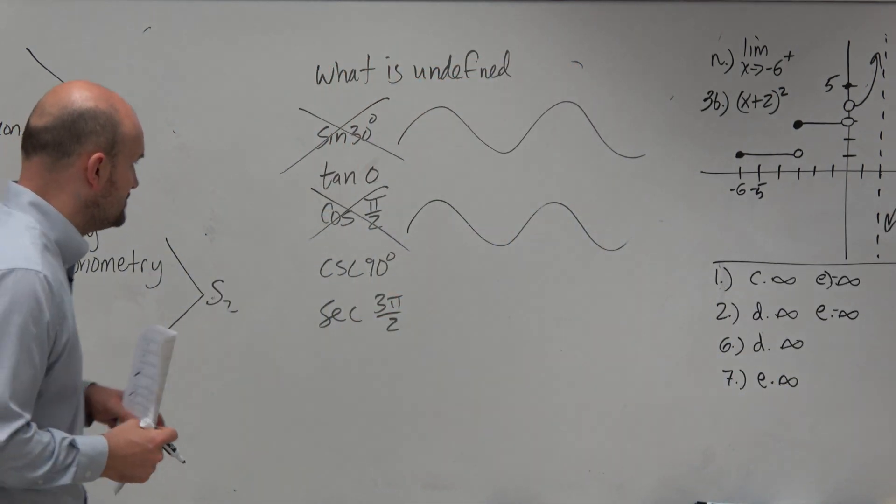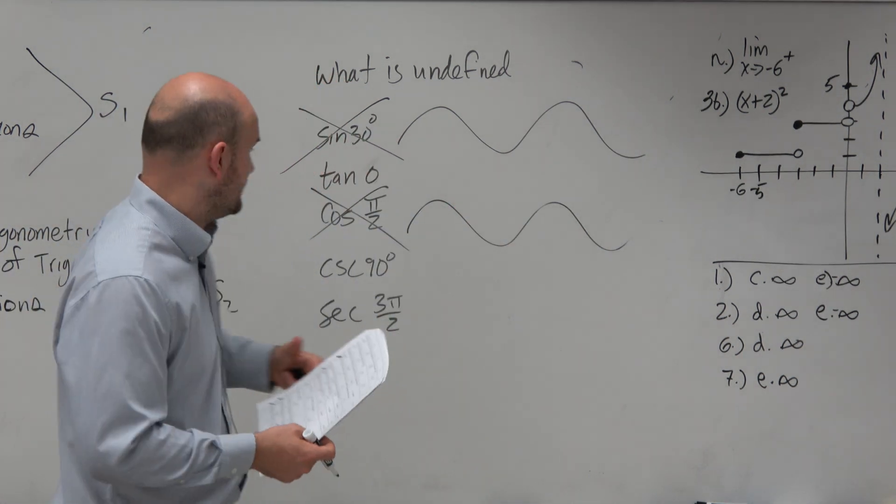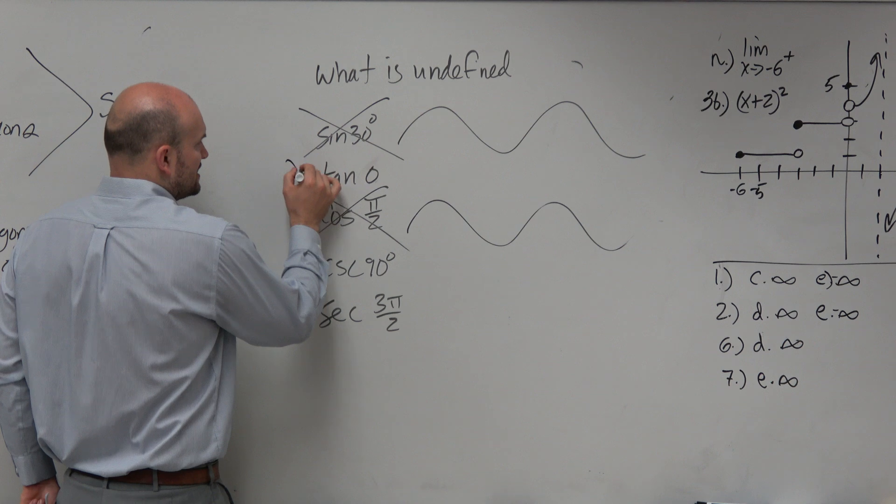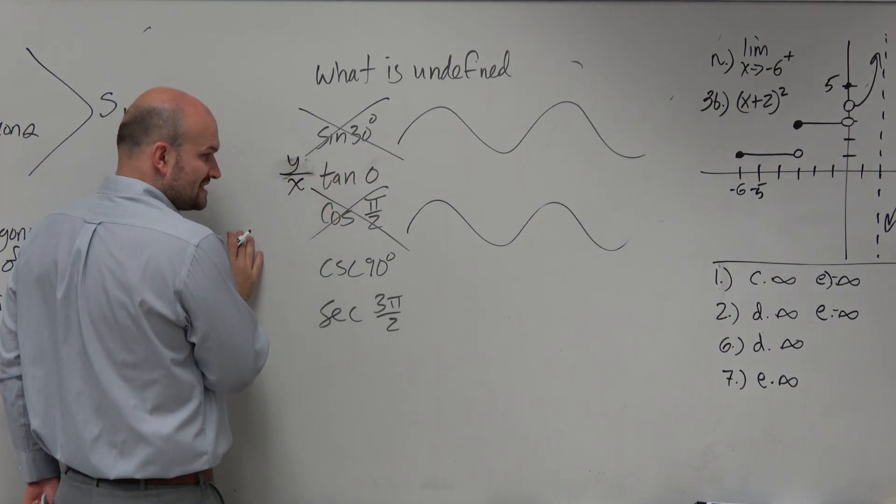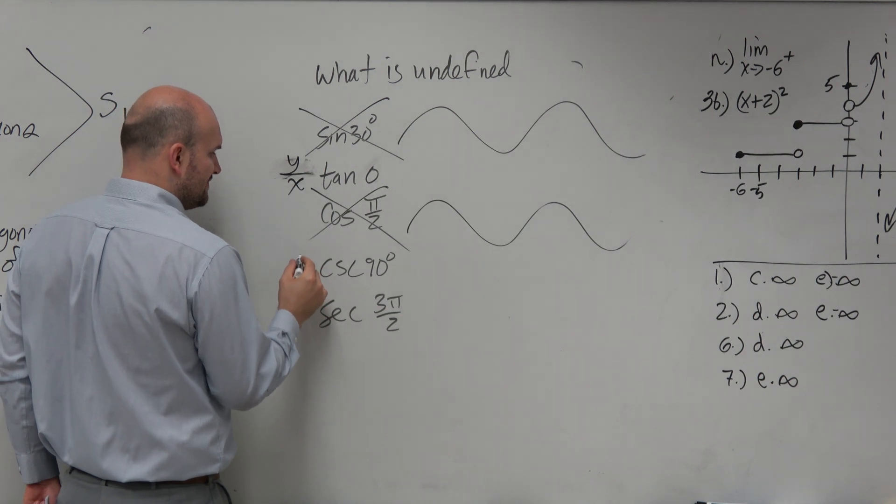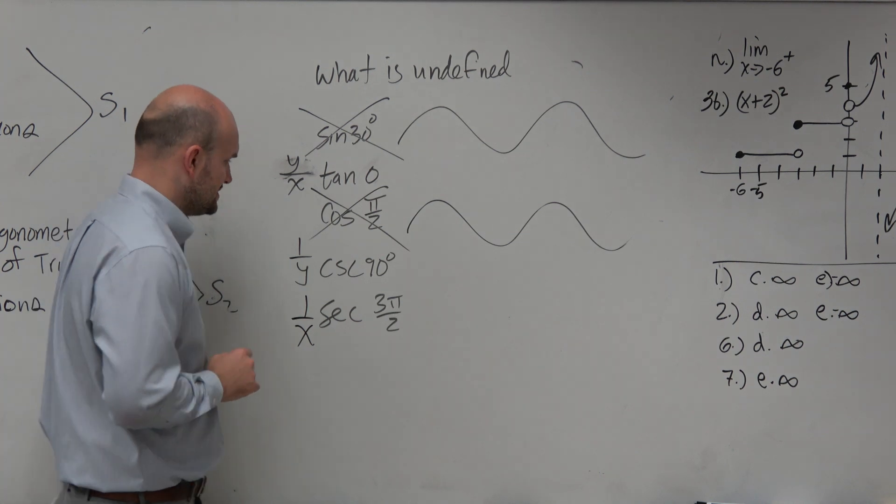The next ones are tangent, cosecant, and secant. If you remember, those have asymptotes because they have points where they're undefined. Tangent is undefined when x is 0. Cosecant is undefined when y is equal to 0. And secant is undefined when x is equal to 0.